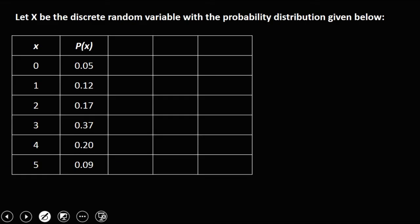We have this given: let x be the discrete random variable with the probability distribution given below. From this distribution, we can now solve for the mean.